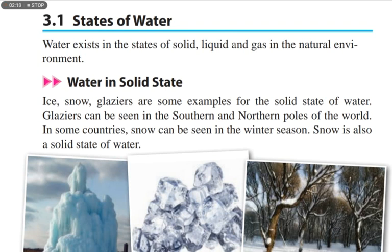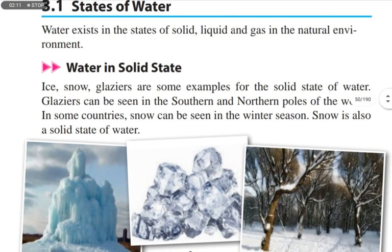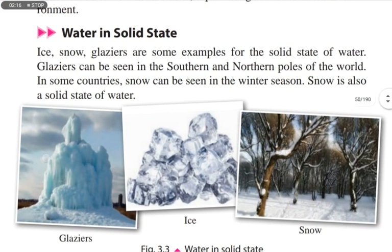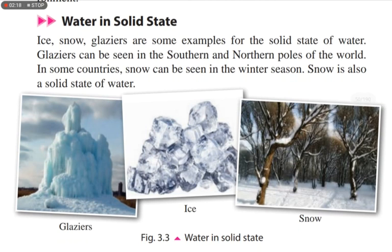Water exists in the states of solid, liquid, and gas in the natural environment. Water in solid state has three examples: glaciers, ice cubes, and snow. Glaciers can be seen in the southern and northern poles of the world.